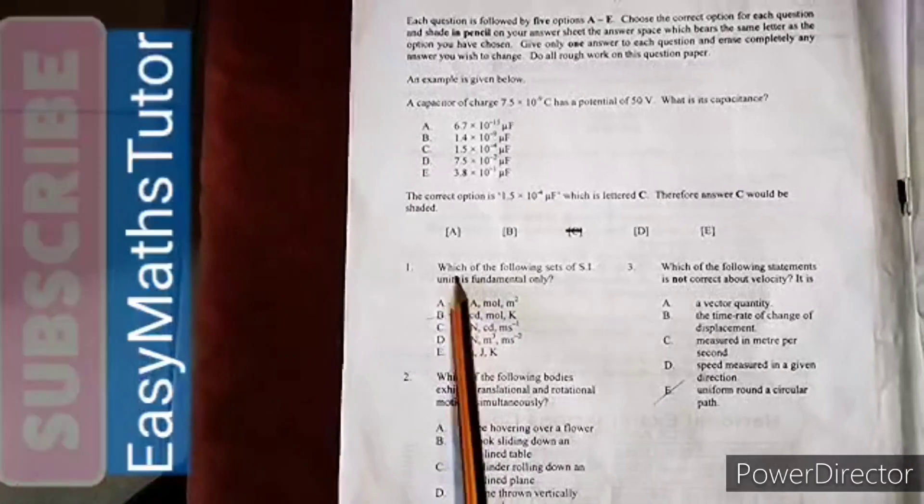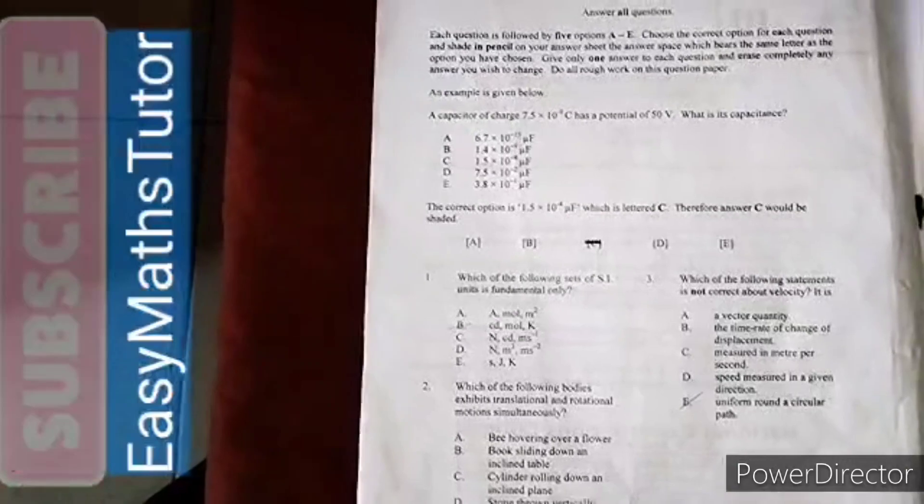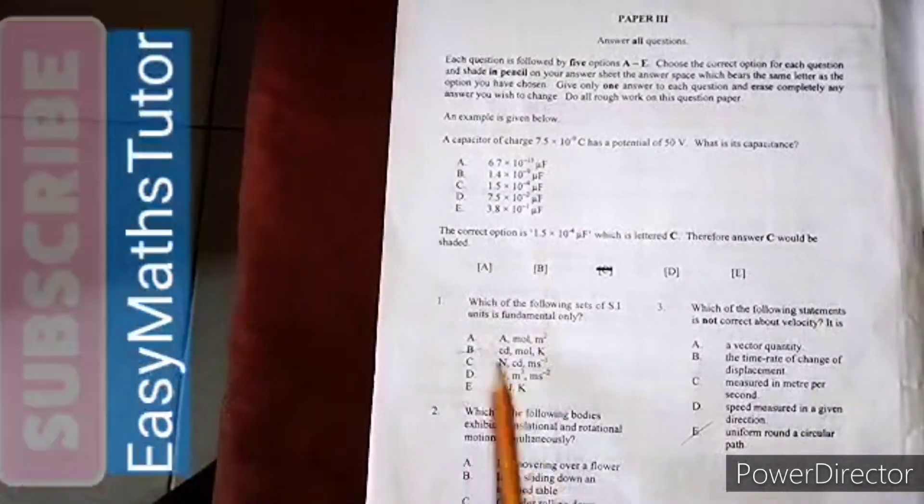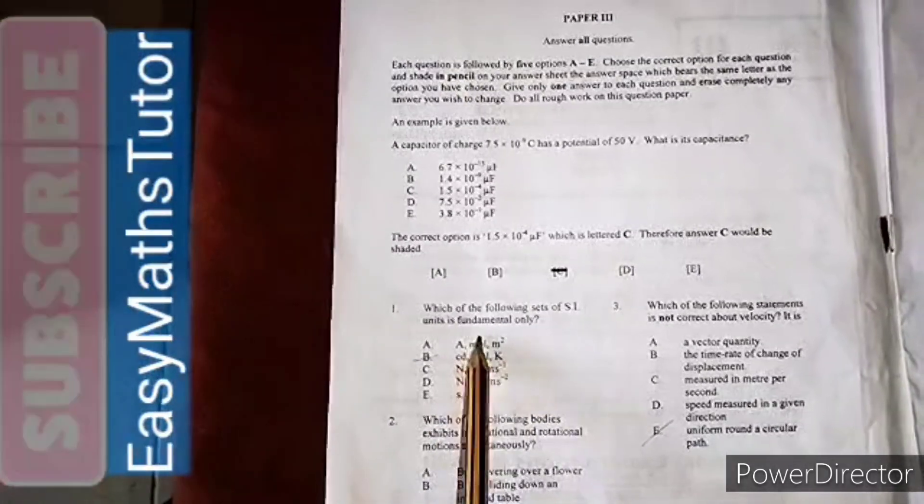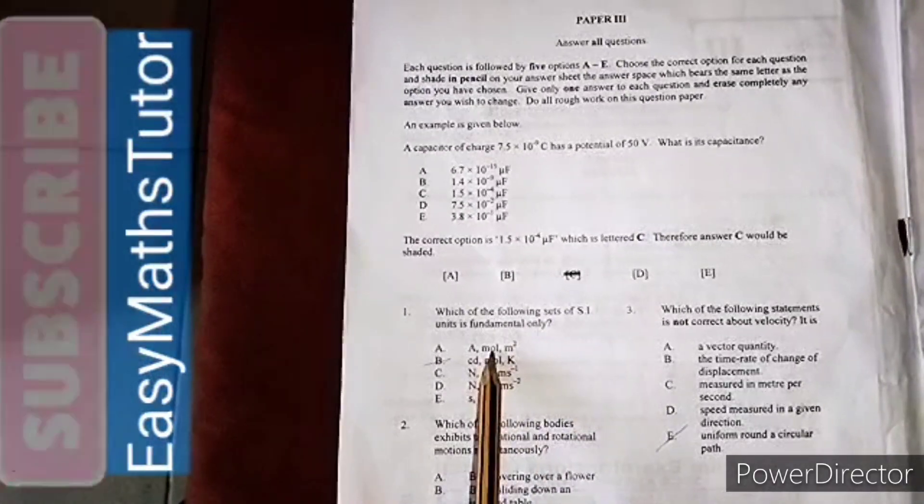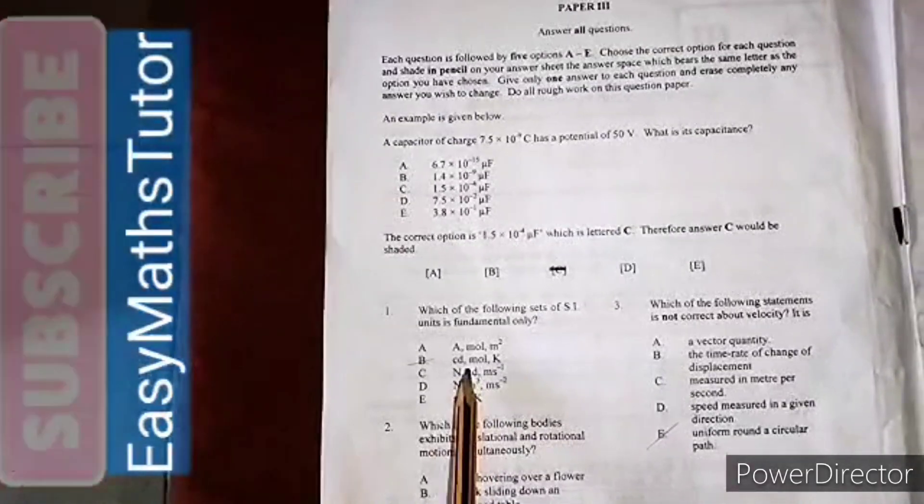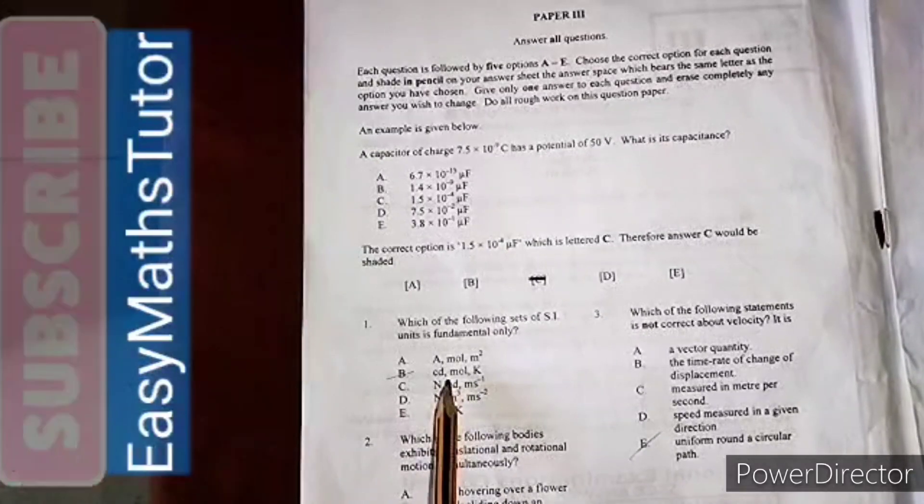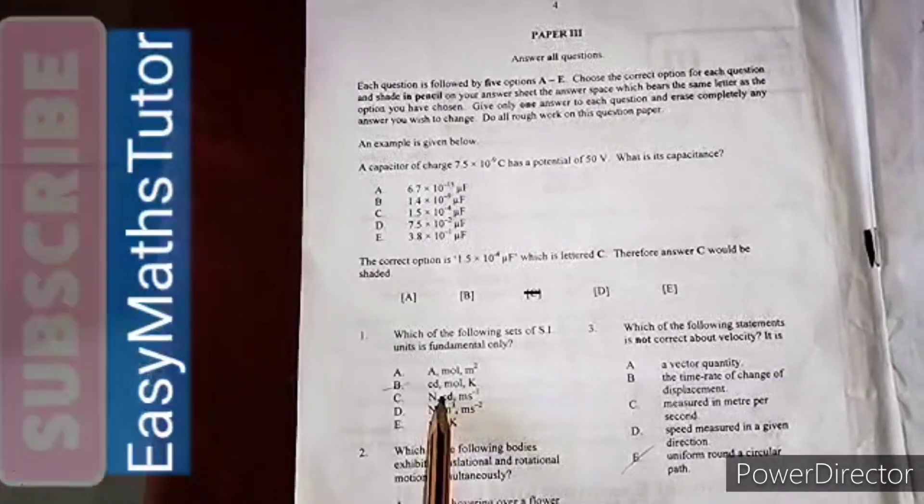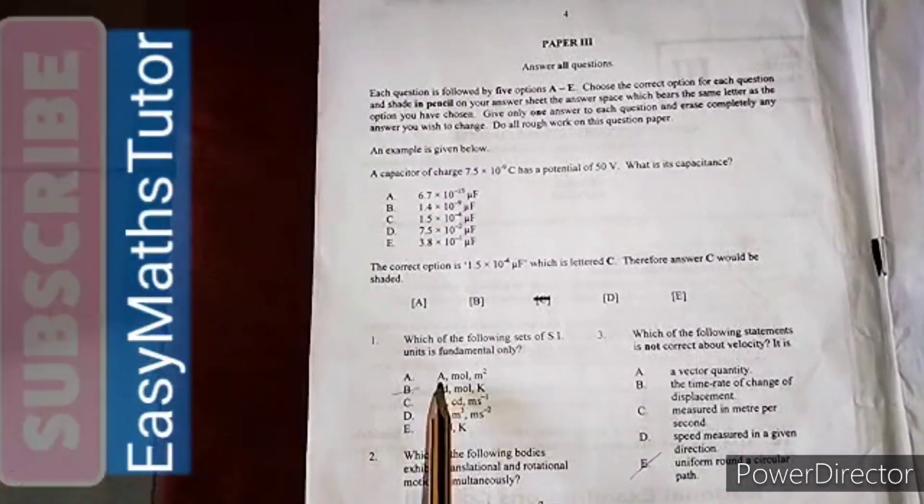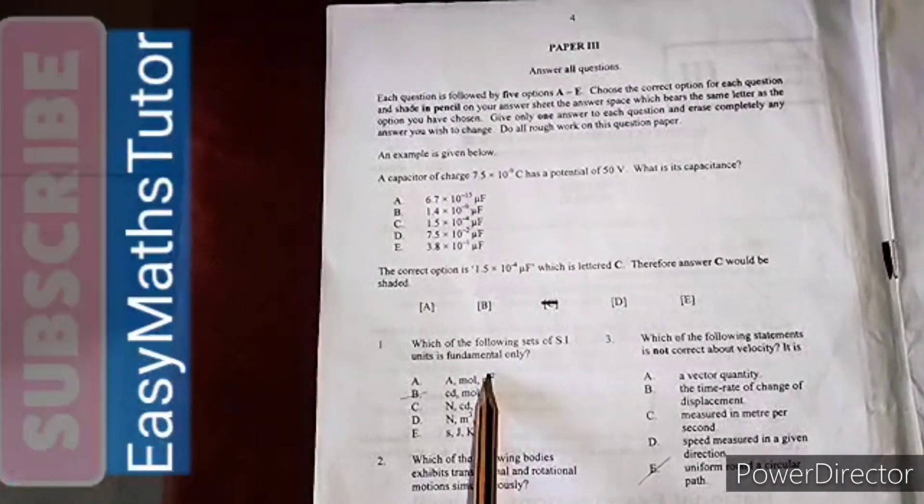The first question: Which of the following sets of SI units is fundamental only? Now, we know what fundamental and derived units mean. Fundamental units are basic units that contain only one unit or entity, while a derived unit contains two or more units. The first option is amp, mole, and meter squared. Because of meter squared, you cannot choose this option.